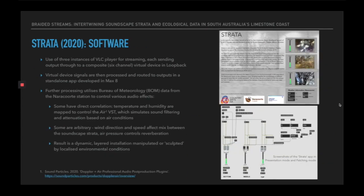For the software, I used three instances of VLC Player for streaming, each sending output to a composite six-channel virtual device developed in Loopback. This virtual device is then processed and routed to input in the Strata standalone app developed in Max 8. Further processing inside the app utilises Bureau of Meteorology (BOM) data from the Naracourt Station to control various audio effects. Some have direct correlation—for example, temperature and humidity are mapped to control the Air VST, a third-party VST from Sound Particles, which simulates sound filtering and attenuation based on air conditions.